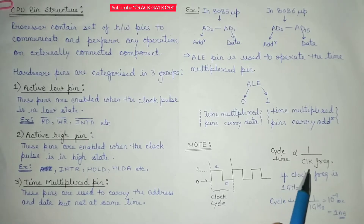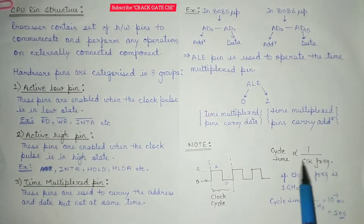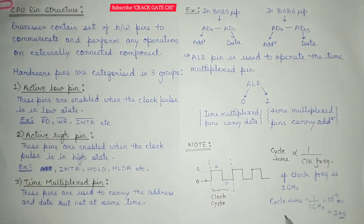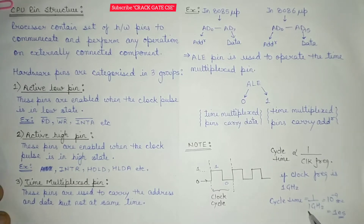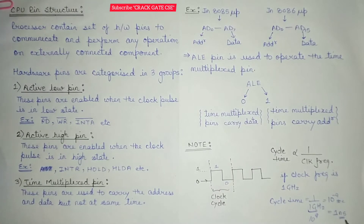The cycle time can be found if you have the clock frequency given, because there will be some clock frequency that we are using in hardware, and this cycle time is inversely proportional to the clock frequency. So if the clock frequency is given as 1 GHz, cycle time will be equal to 1 upon 1 GHz. 1 GHz means 10 to the power 9, and if we bring it to the numerator, it will be 10 to the power minus 9 seconds, which is known as 1 nanosecond. So this is how you can find out the cycle time.